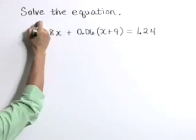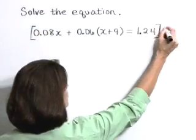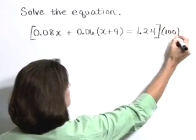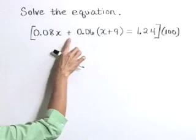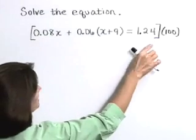I'm going to start here by multiplying everything on both sides of the equation by 100. To make this a little bit easier to work with, it's going to move our decimal point over two places in each of these terms.